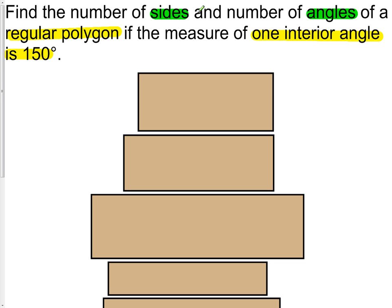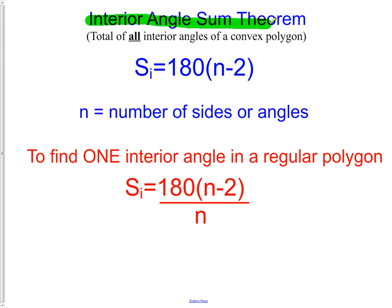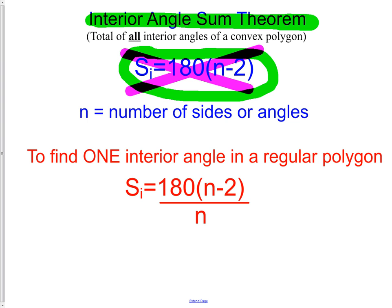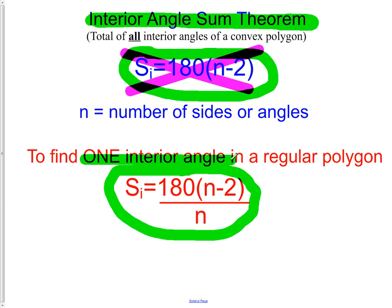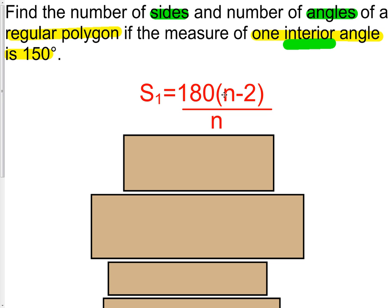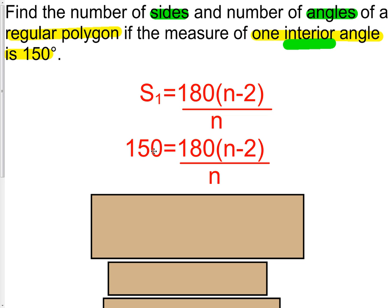Since it's a regular polygon with a known interior angle, we use the Interior Angle Sum Theorem — specifically the formula for one interior angle: SI = 180(N − 2) / N. We're not using the total sum formula because that gives all angles combined; we need the single-angle formula. We know the one angle is 150 degrees and we need to solve for N.